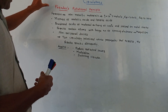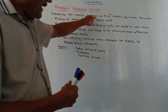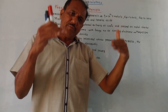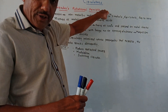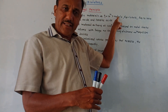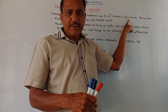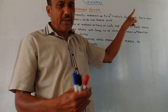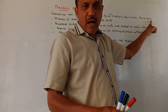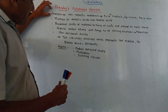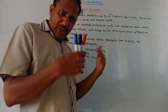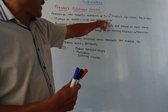Ferrites are non-metallic materials having some important properties. The resistivity of ferrite material is 10 to the power 14 times greater than metal. The relative permittivity (εr) is in the range of 10 to 15, and relative permeability (μr) is around 1000. Basically, ferrite material is a mixture of metallic oxide and ferrite oxide.